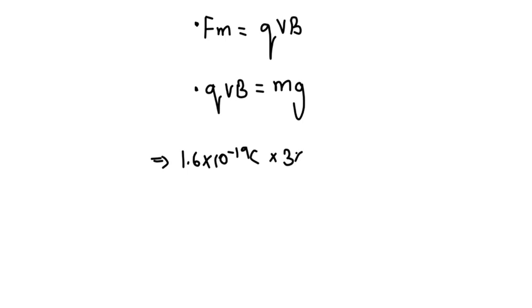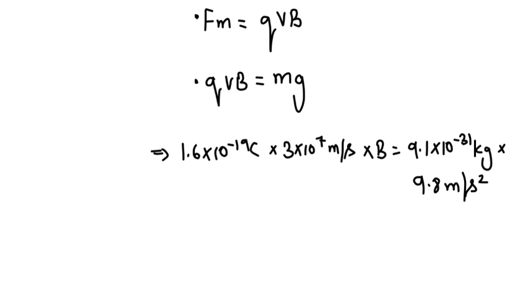into 3 into 10 raised to the power 7 meter per second into b, and that equals mass, that is 9.1 into 10 raised to the power minus 31 kg, into gravitational acceleration, that is 9.8 meter per second square. From here, solving for b, we get 5.5 into 10 raised to the power minus 12 tesla.